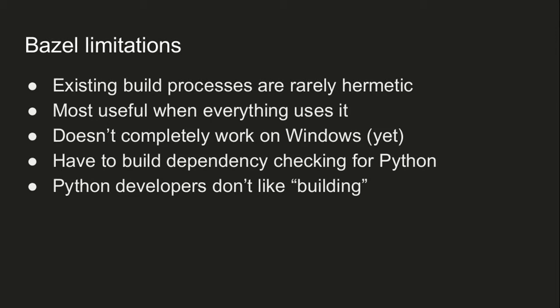Unfortunately Bazel doesn't quite work on Windows yet — they're working on it, it's on the roadmap, so this should be only a short-term limitation. And then specifically for Python, some things I've encountered: I showed you how it will catch wrong C++ dependencies, but that doesn't work for Python because if I don't include a library in my transitive dependencies my application will just error out when I run it, but it doesn't enforce direct dependencies. So where I work, we've actually built some static analysis which does enforce that for us. And the last thing is that Python developers use Python partly because it has a fast iteration cycle and they don't really like building things — like this is Python, why are we doing that? You have to build some automatic tooling to make the build step sort of disappear to disgruntled Python developers.